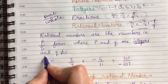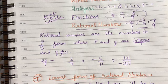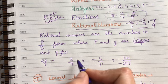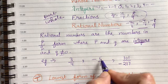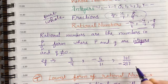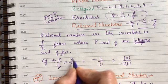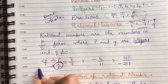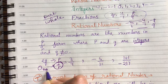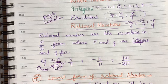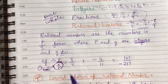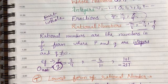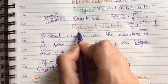Rational numbers are the numbers in the form of p by q, where p and q are integers and q is never zero. That means they are in the form of a fraction, but here the fraction can also be negative. For example, 3 by 4, minus 5 by 11, 101, minus 2 by 7 — so these are all numbers in p by q form where p and q are integers and q can never become 0. So that is our rational numbers.